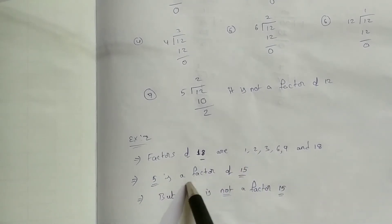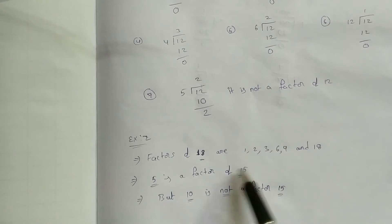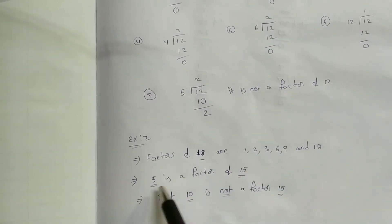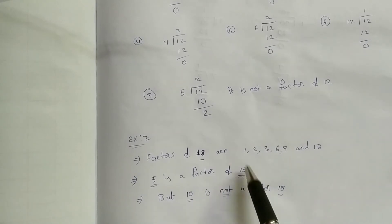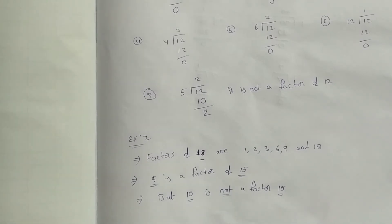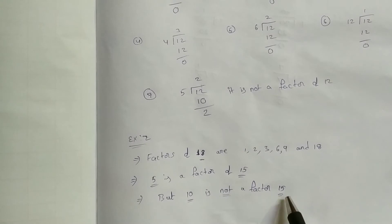So, 5 is a factor of 15. When we divide 15 by 5, the remainder is 0, so 5 is a factor of 15. But 10 is not a factor of 15. When we divide 15 by 10, the remainder is 5, so 10 is not a factor of 15.